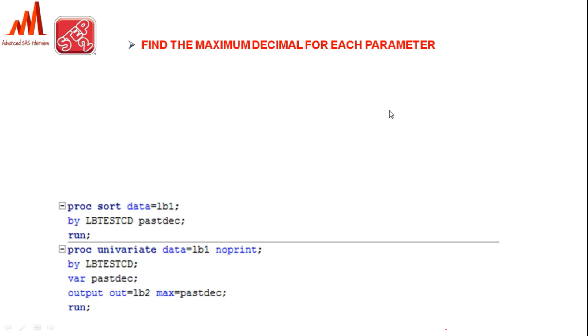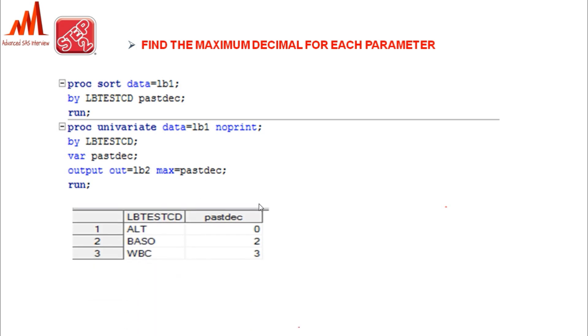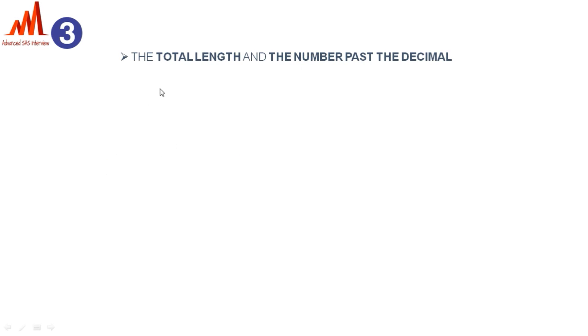Step two is to find the maximum decimal for each parameter. Using PROC UNIVARIATE with the same LBTESTCD grouping, find the maximum number of decimals for each particular parameter. For example, WBC has a maximum of three decimal places, BASOFILS has two decimal places, and for the ALT parameter, among all the data there are no decimals — so that is zero. Once we find the maximum decimals, we can assign the total length and number of past decimals.